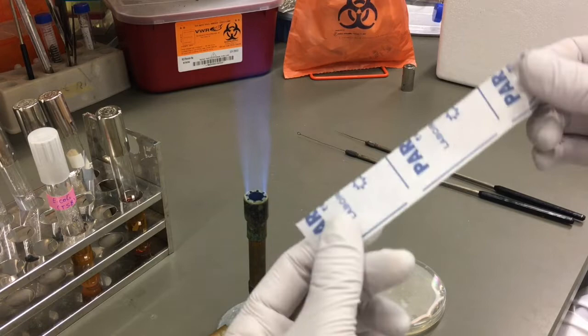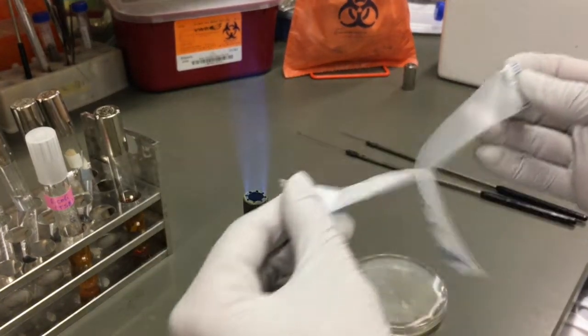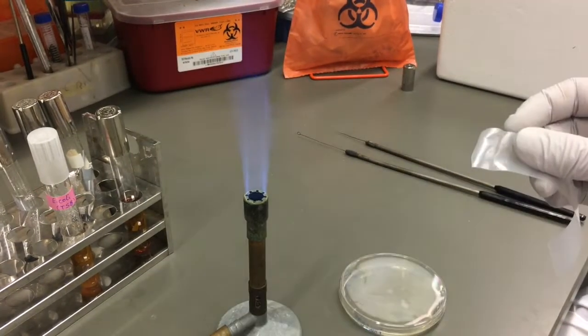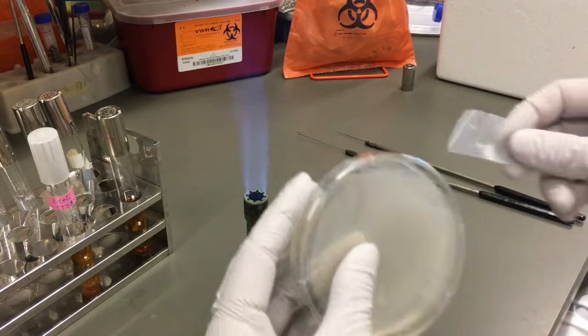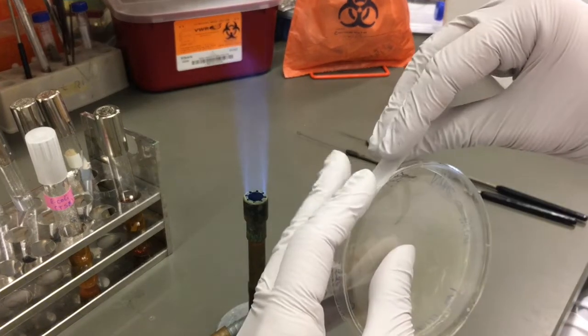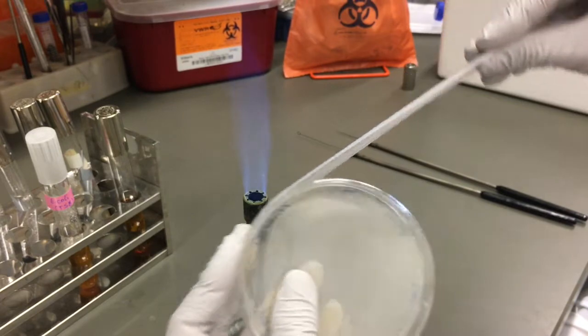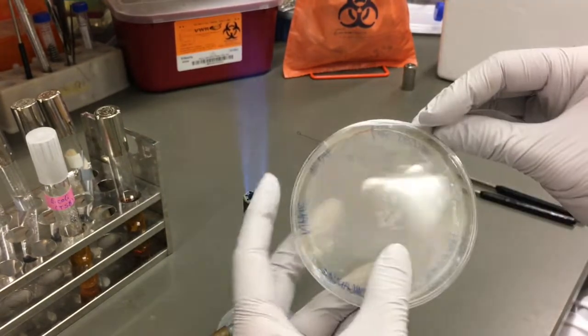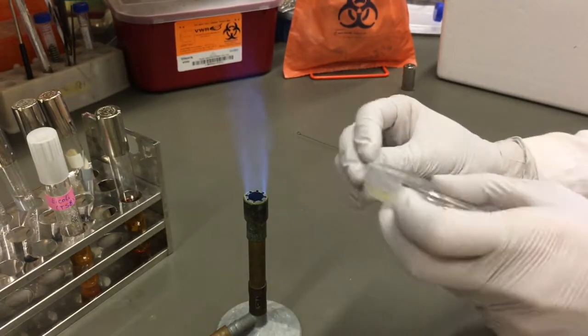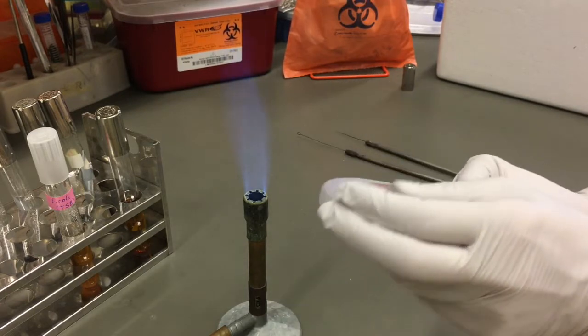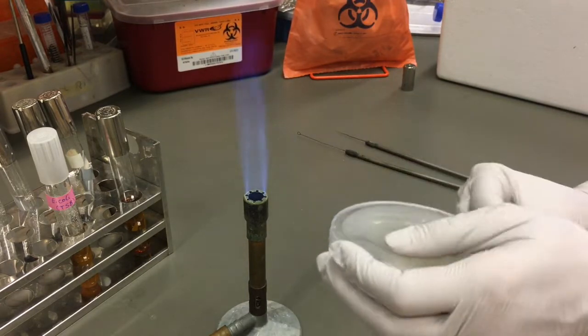Before we incubate our plates, we must be sure to seal them with parafilm. This ensures no contamination of our plate and nothing from our organism will escape. Parafilm is gas permeable, but water and moisture will be retained inside the plate. So this is why we must incubate our plates upside down in case any condensation that forms will be on the lid and not on the surface of the agar.